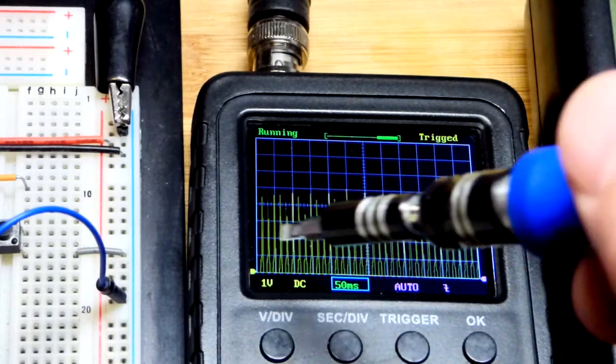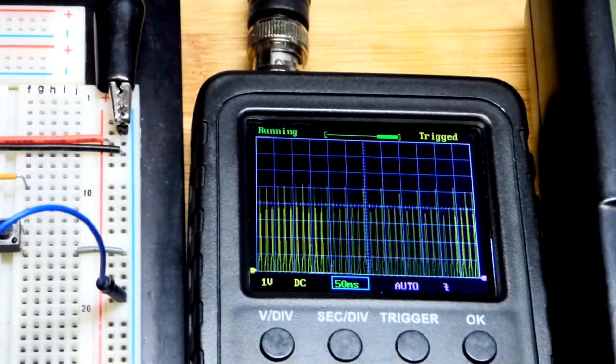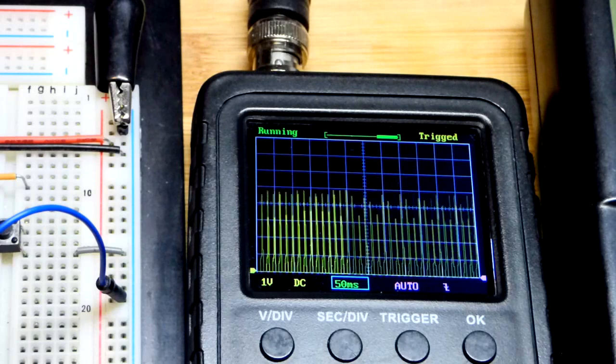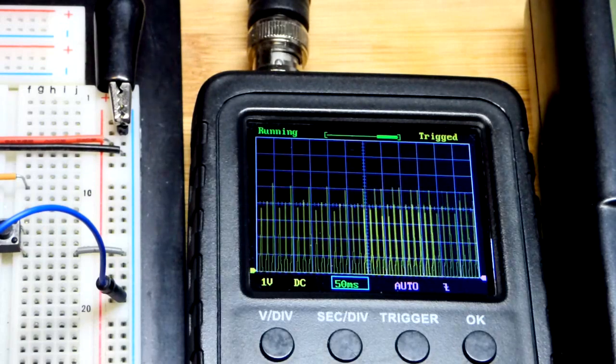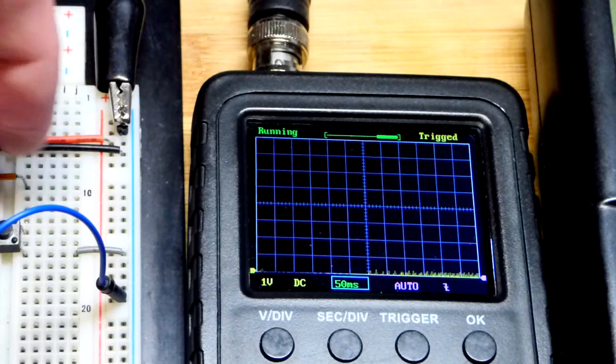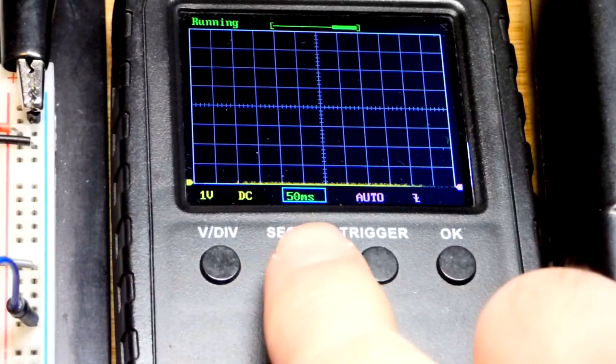I'm alternating current about 60 times a second due to the household power around me bouncing off of me—the electromagnetic waves which the oscilloscope can pick up really easily.